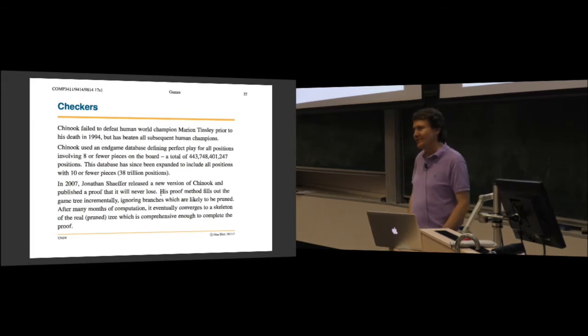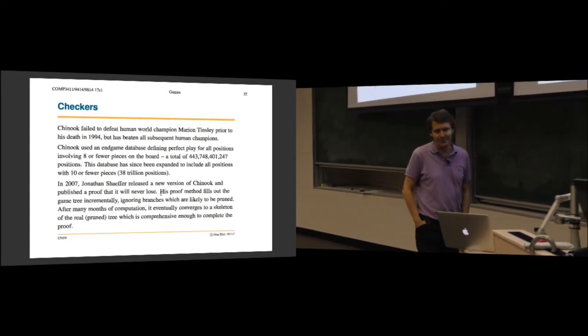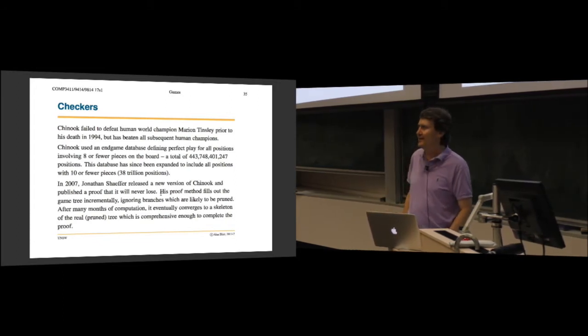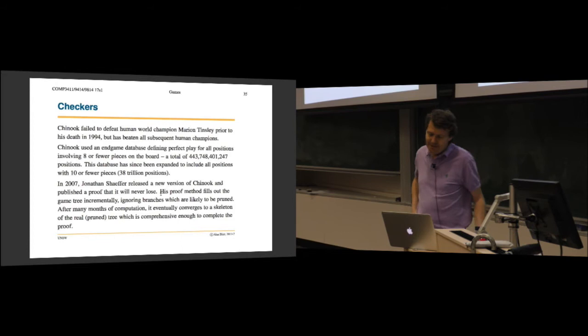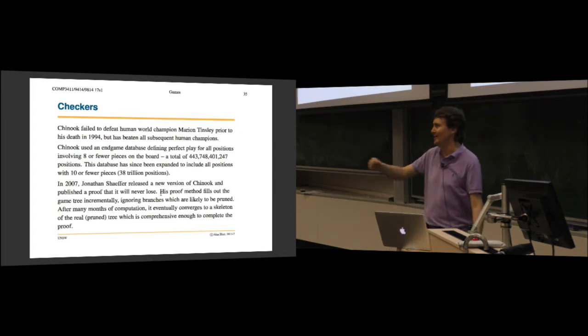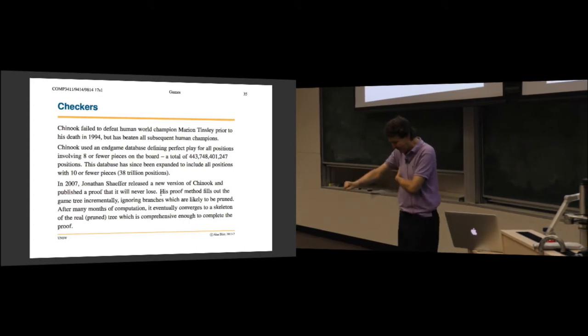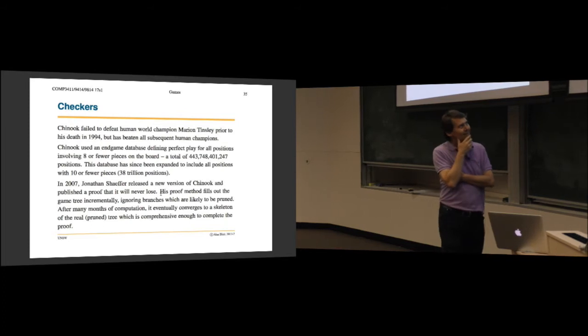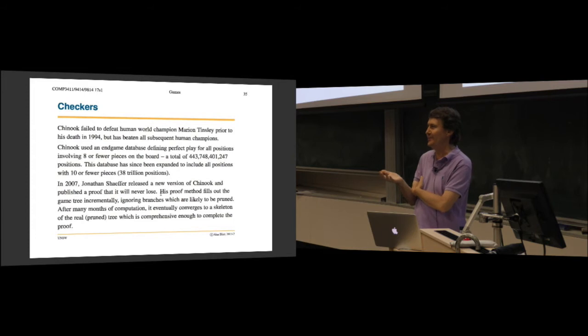The computers have beaten every subsequent human. Schaefer started getting nasty emails after that. Oh, you took advantage of a sick man, and Tinsley in his prime could have definitely beaten Chinook. So a self-confessed obsessive-compulsive, eventually he set out to try to prove that his player would never lose. Tinsley, in his entire career, only lost five games. Sometimes he drew, the five games that he lost, two of them were in competition, and the other three were in situations where he'd go to a shopping center and he's playing simultaneously against 20 other people. Each person has a long time to think about their move, and then he's just walking from board to board making moves, thinking of a couple of seconds. And on three occasions people managed to win against him.